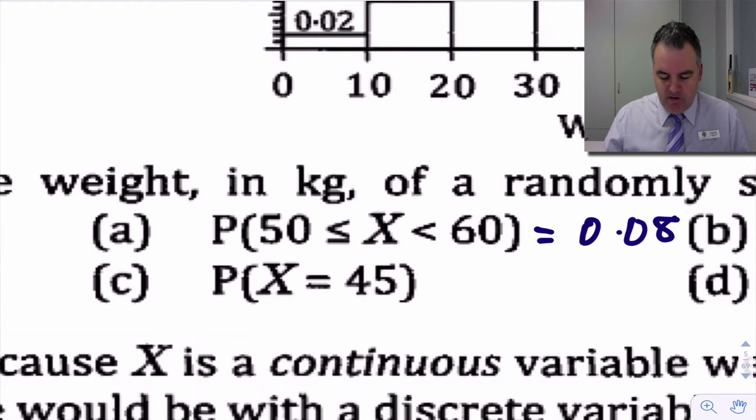What's the chance that we're exactly 45 kilos? As I've just explained, zero. The chance of you being any particular value is zero.